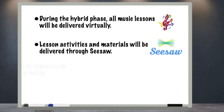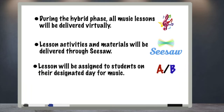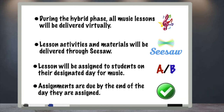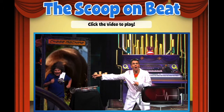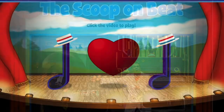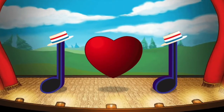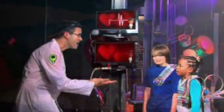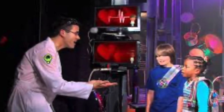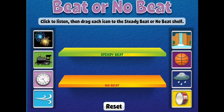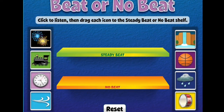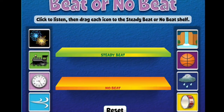Lessons will be assigned to students on their designated day for music, and assignments are due by the end of the day they are assigned. In today's lesson, we will learn about the beat. The beat is the heartbeat of music. We will learn how faster and slower beats change the music, and we will also learn which objects have a beat and which do not.